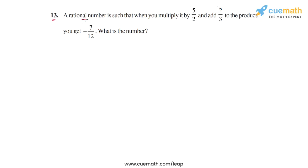Question 13 says that a rational number is such that when you multiply it by 5/2 and add 2/3 to the product, you get -7/12. What is the number?